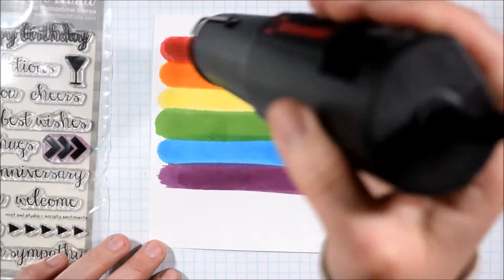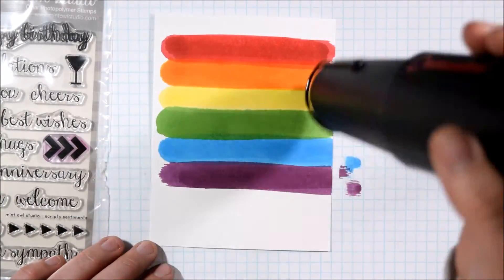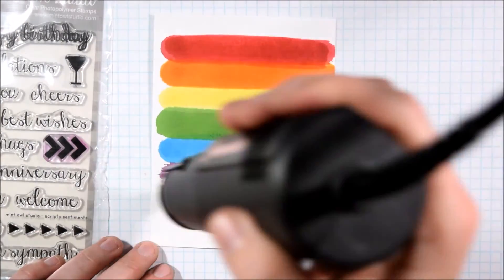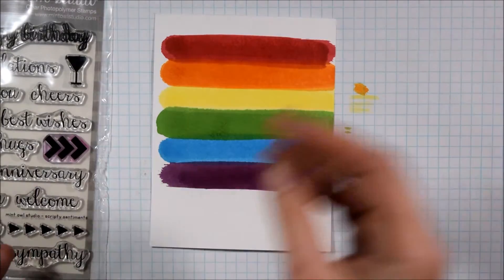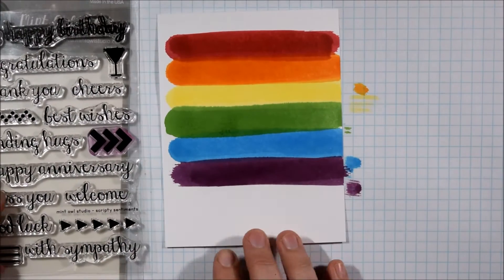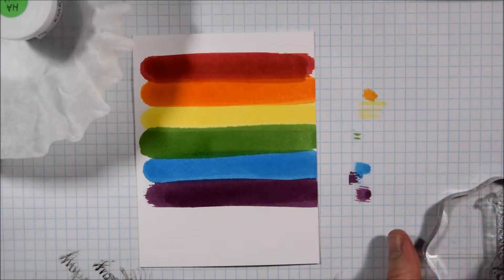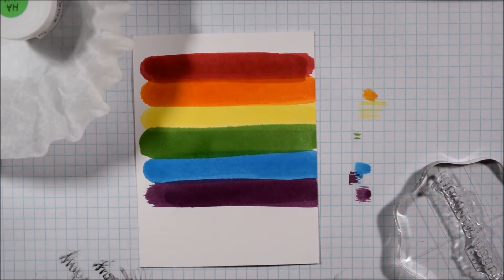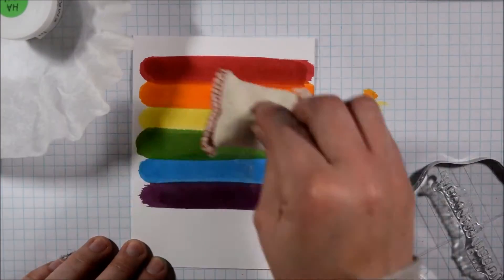If you do want to get a little bit of blending between the colors you can purposely lay the stripes over each other and since distress stains are a little bit translucent one color will show through the other and there were just little strips that did overlap for me but I wasn't necessarily going for that look. I just wanted some bold colorful rainbow stripes.